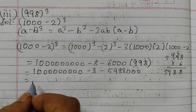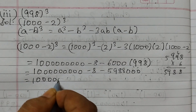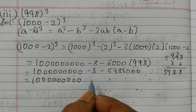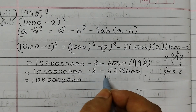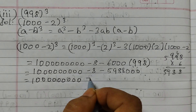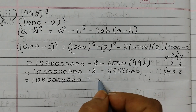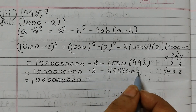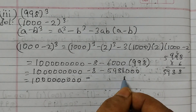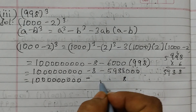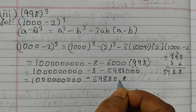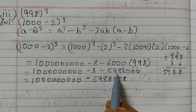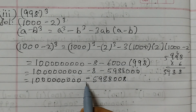We keep 1,000,000,000 as it is. The expression is 1,000,000,000 minus 8 minus 5,988,000. We add the two negative terms: 8 + 5,988,000 = 5,988,008, and then put the minus sign. That's how we add integers before subtracting.